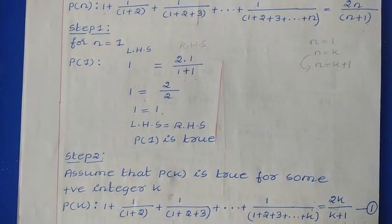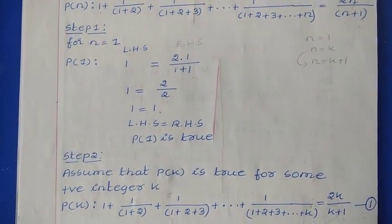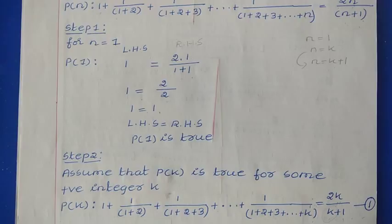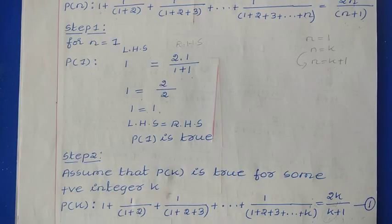So in step 1, we got that the given statement is true for N=1, which means P(1) is true. Now we can proceed to the second step. In step 2, we make the assumption: we take some positive integer K and assume that the given statement is true for that particular integer.